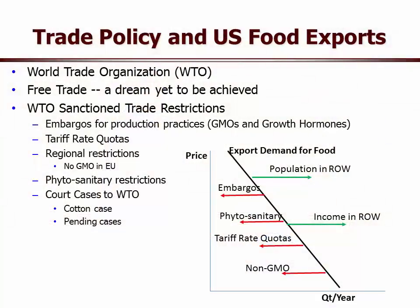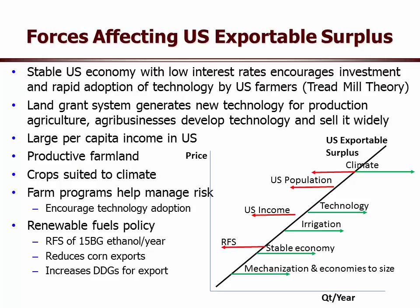To summarize what all this does to exportable demand for food from the US: population and rest-of-world income are positive shifters, while embargoes, phytosanitary restrictions, tariff rate quotas, and non-GMO concerns are all pulling back our demand for exports.